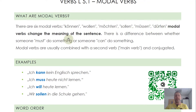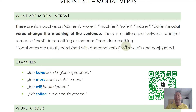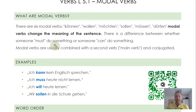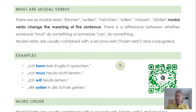Modal verbs change the meaning of the sentence, but they do not change the action itself. The main difference is whether someone must do something or someone can do something — those are exactly modal verbs. They change the modalities, that's why they're called modal verbs. But they do not change the action itself, so we always have to combine them with a second verb, the main verb, which is the one telling us what's happening.